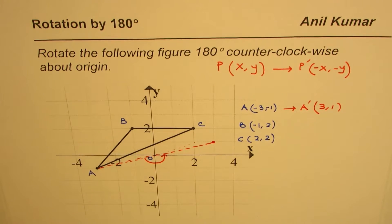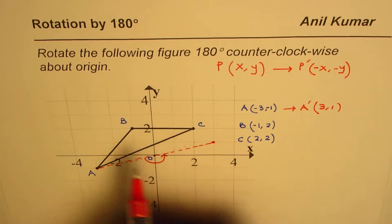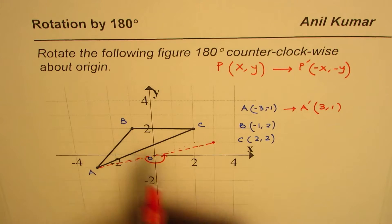Point A is (-3, -1), so when it changes the sign we could write this as (3, 1). The location is right there.